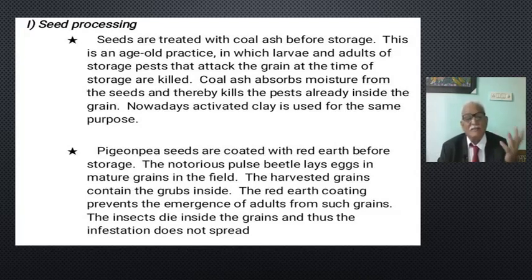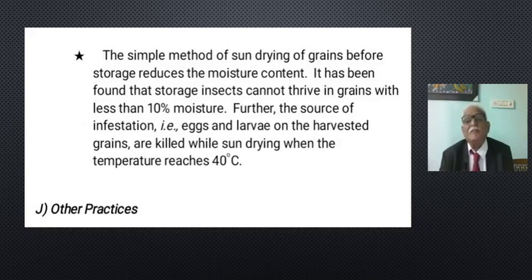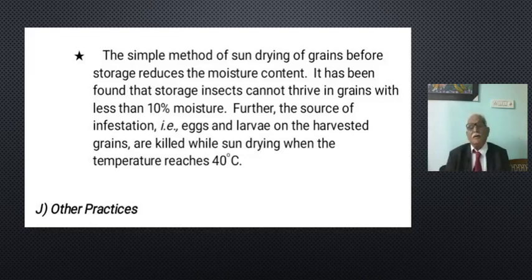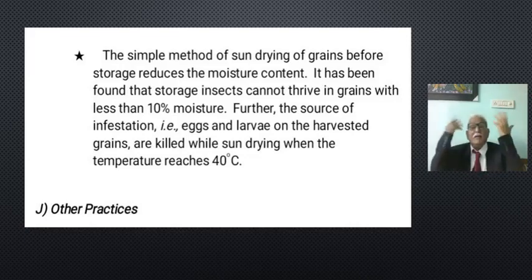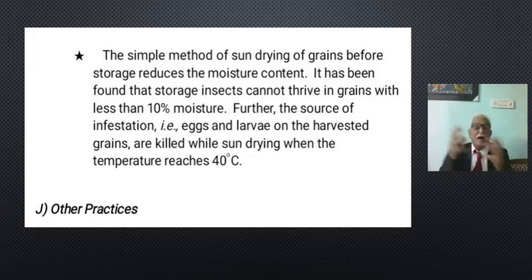The simple method of sun drying of grains before storage reduces the moisture content. It has been found that storage insects cannot thrive in grains with less than 10% moisture. In modern agriculture we also try to keep grain moisture around 10–12%. In ancient times, simple sun drying was the practice. The advantage is that the source of infestation — eggs and larvae present in the harvested grains — are killed during sun drying when temperatures reach around 40 degrees centigrade.